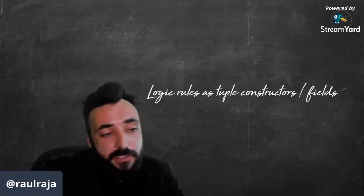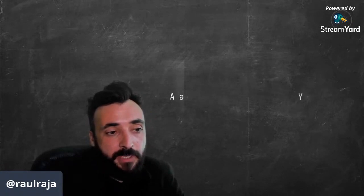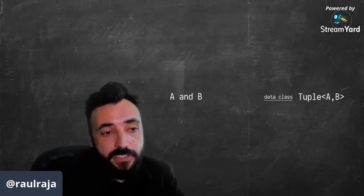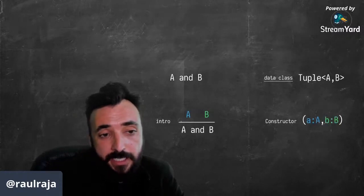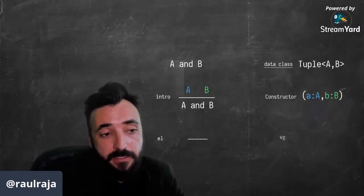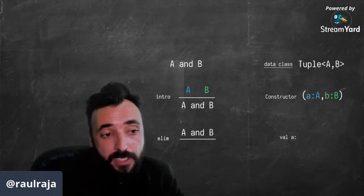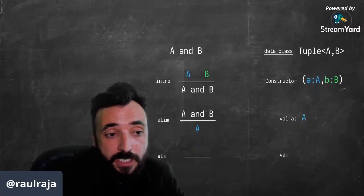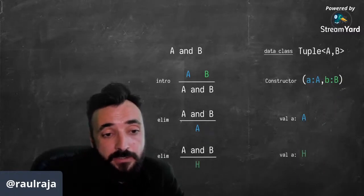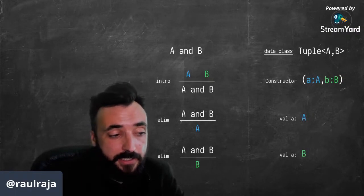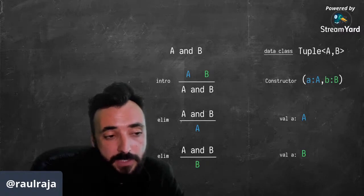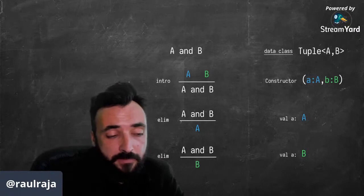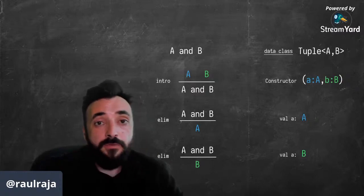Some of these rules that we are seeing manifest themselves in many parts of the language. For example, the one we said that A and B, we can see that encoding in a language like Kotlin as a data class for a tuple or a pair. We can see the one for the introduction that if we have A and B, therefore we have A and B as an indication that is our constructor, and then by elimination each one of the fields that will access these values in the type system. So we yet see more the relationships between what people are using in logic and people are using in other parts of type and set theory in what we actually encode in our languages such as Kotlin.